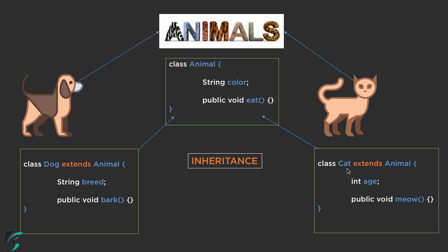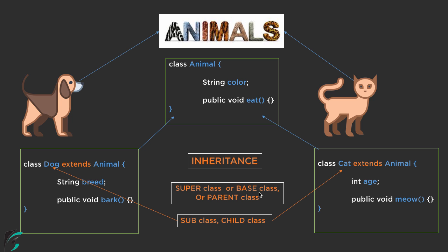Like you inherit some properties from your parents, similarly cat and dog are actually acting as the child class, and animal is actually the parent class. This inheritance of property is known as the concept of inheritance in Java. Technically, the cat class and the dog class are known as the subclass or the child class. And this animal class from which we are inheriting some properties can be called as superclass, base class, or parent class. So in future, whenever I use the term superclass, base class, or parent class, always remember I am talking about the class from which some class is actually inheriting some property.